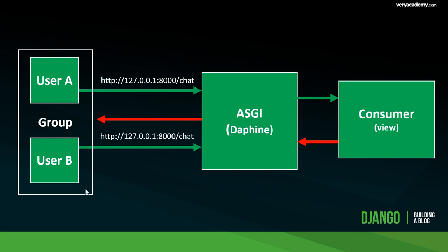We're logically placing users into groups to better manage who to send messages to. When we want to send a message back, because all users are in a group, we just send to the group and all users in it receive the message. We're sending messages to all users, but we only want to send to users in that specific chat room — not everyone connected to the server — so we use groups to identify who's in that specific chat room.